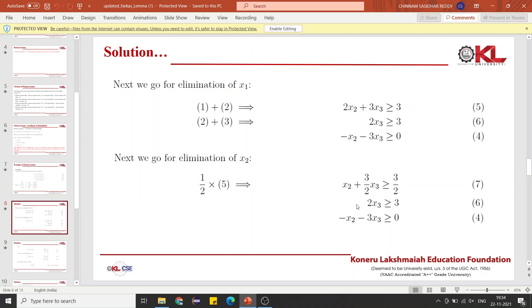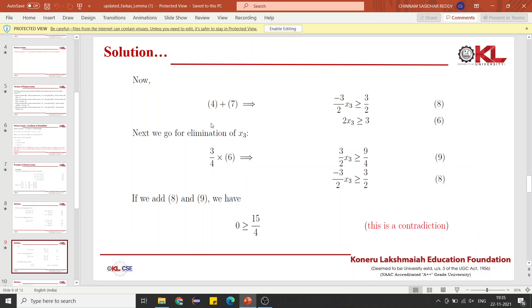It is very important to write: 1/2 times equation 5 gives you x2 plus 3/2 x3 greater than or equal to 3/2, and number that equation as 7. Now, to eliminate x2, you will add equation 7 and equation 4. Adding equations 4 and 7 eliminates the x2 variable and we number this equation as 8.